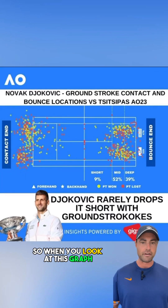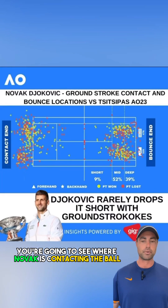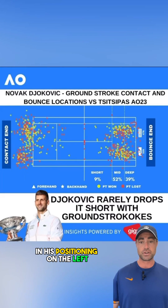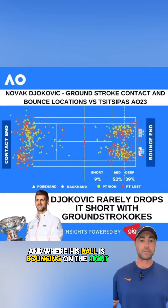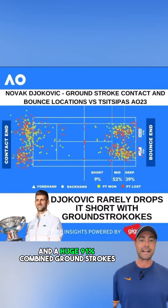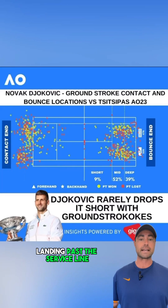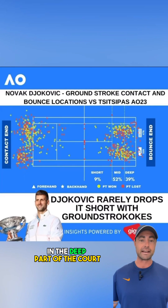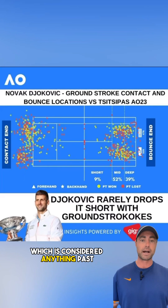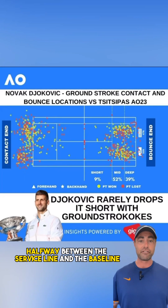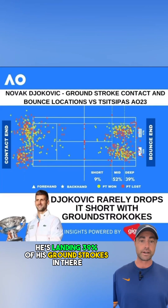When you look at this graph, you're going to see where Novak is contacting the ball in his positioning on the left and where his ball is bouncing on the right. A huge 91% combined ground strokes are landing past the service line. And in the deep part of the court, considered anything past halfway between the service line and the baseline, he's landing 39% of his ground strokes in there.